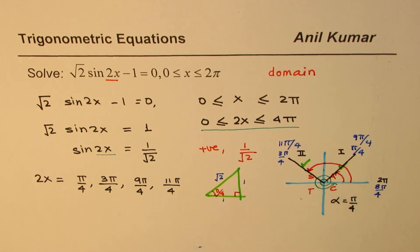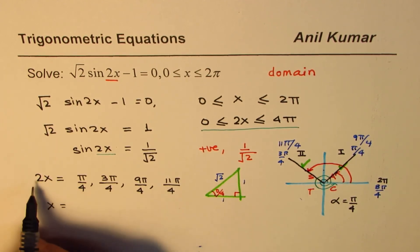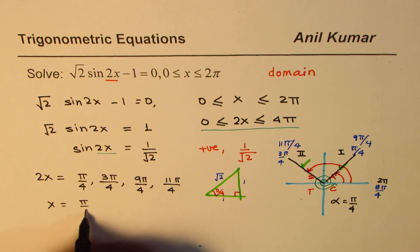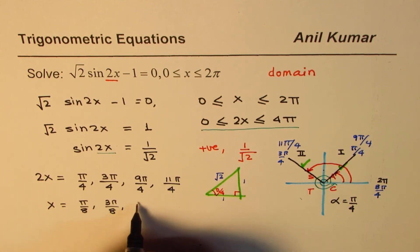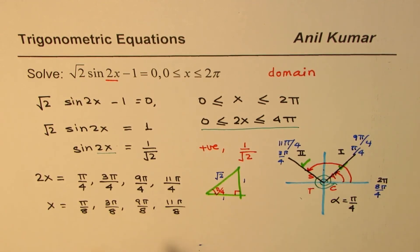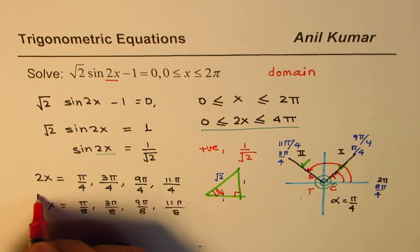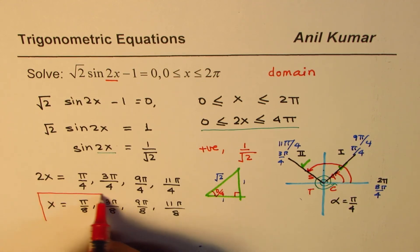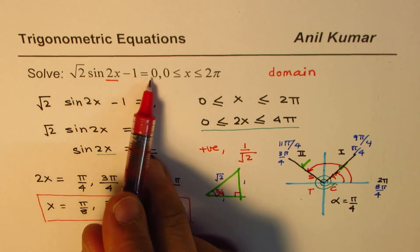Now, what is x equal to? We divide all these values by 2. So 2x gives us x: π/8, 3π/8, 9π/8, and 11π/8. These are all the solutions. That is the answer for the equation √2 sin(2x) − 1 = 0.